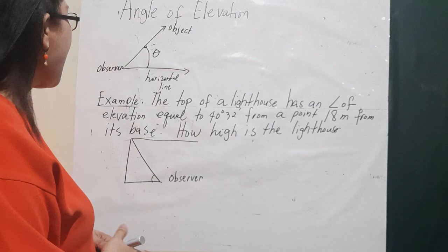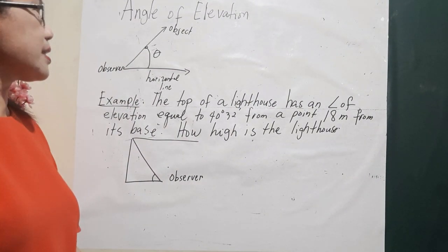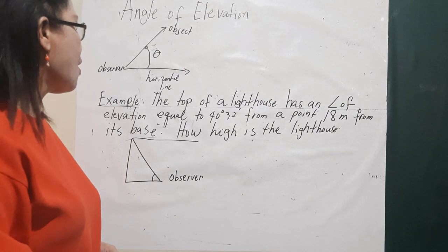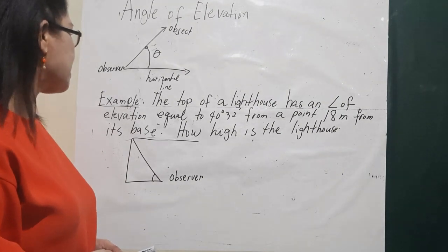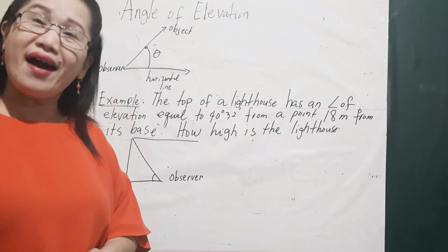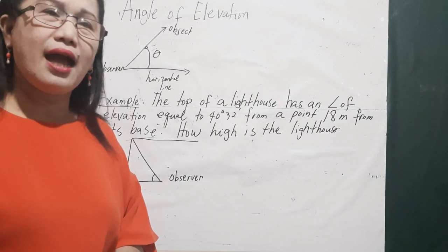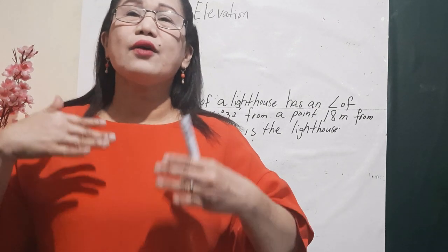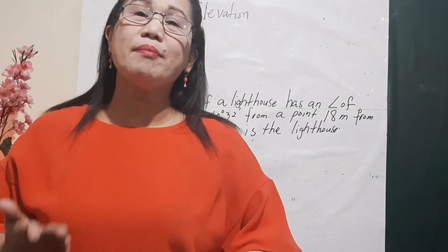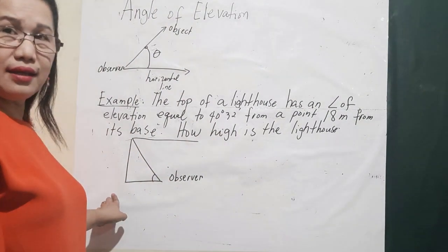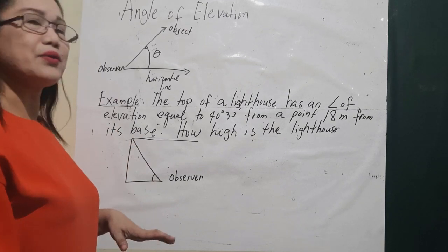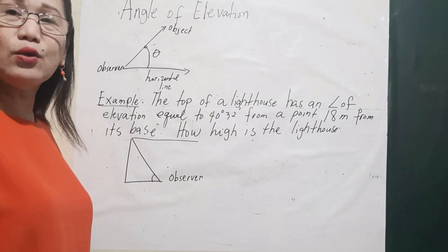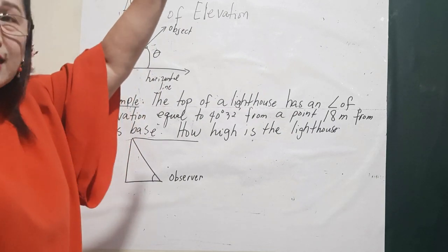Here is our first example: the top of a lighthouse has an angle of elevation equal to 40 degrees and 32 minutes from a point 18 meters from its base. The question is: how high is the lighthouse? To solve this, we use a right triangle to represent the angle of elevation. The lighthouse is at the top and you, the observer, are standing at the base looking up.